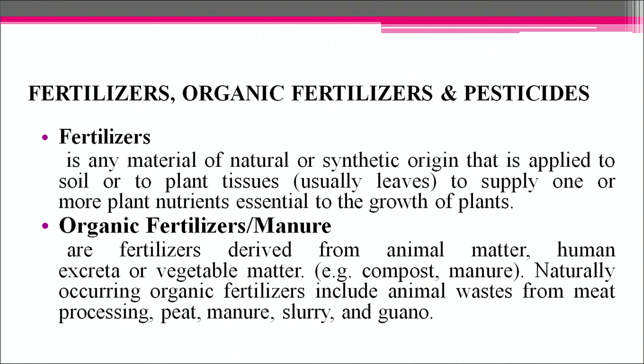Now we will discuss organic fertilizers, pesticides and fertilizers. Farmers use both organic fertilizers produced from plant and animal waste as well as commercial chemical fertilizers produced from various inorganic compounds. A fertilizer is any material of natural or synthetic origin that is applied to soil or plant tissues to supply one or more plant nutrients essential to the growth of plants. Organic fertilizers or manure are derived from animal matter, human excreta or vegetable matter. Naturally occurring organic fertilizers include animal waste from meat processing, peat, manure, slurry and guano.